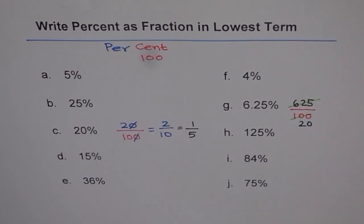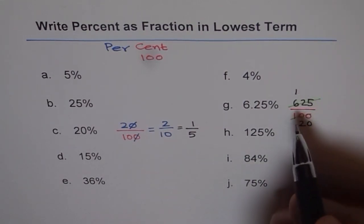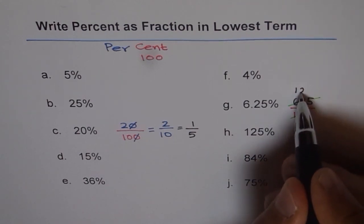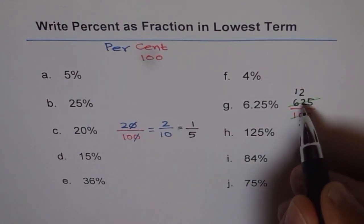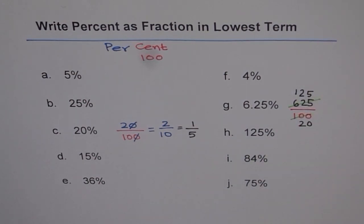Now let us divide 6.25 by 5. So 5 goes into 6 one time. You get remainder 1. So 1 and 2 when you bring it down becomes 12. 5 times 2 is 10. You get 25 and 5 times 5 is 25. So you get 25 by 20.